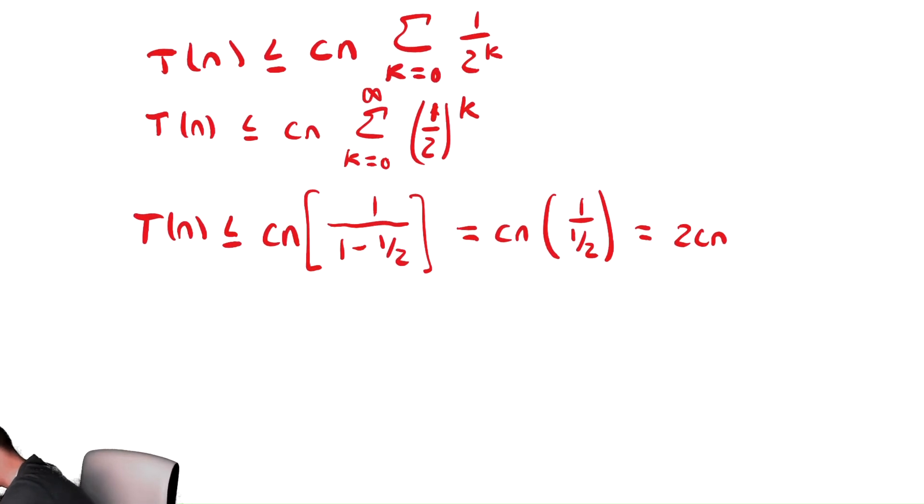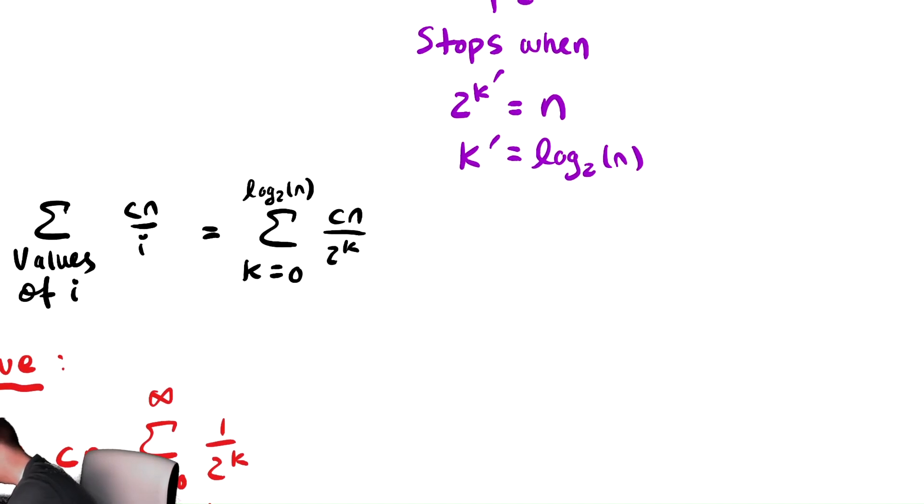We also relatively fast bound below by taking the summation and replacing it with the first term of the sum. This summation is equal to the terms of it are cn plus plug in k equals 1, that's cn over 2, plus plug in k equals 2, that's cn divided by 4, and so on. This is definitely, definitely, definitely greater than or equal to cn.